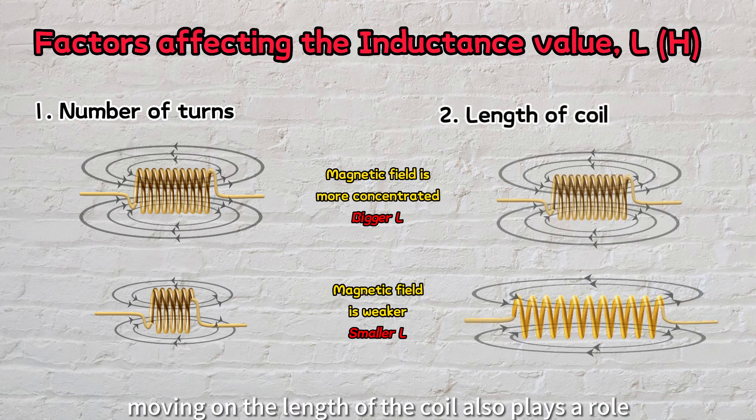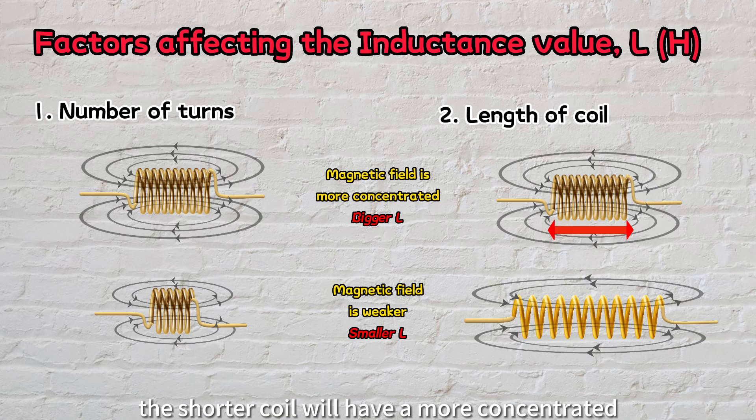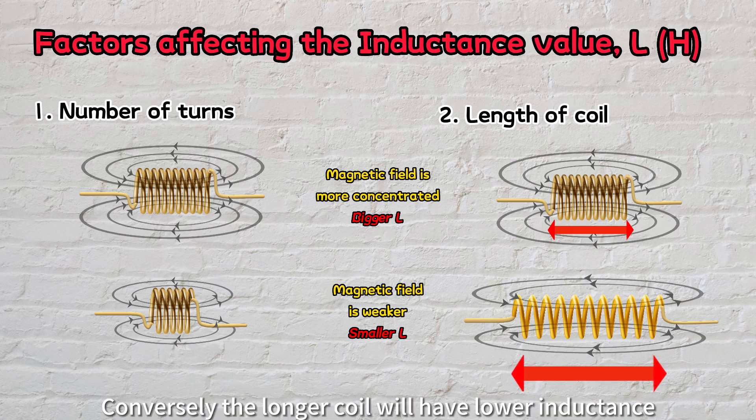Moving on, the length of the coil also plays a role. Imagine two coils with the same number of turns but different lengths. The shorter coil will have a more concentrated magnetic field and higher inductance. Conversely, the longer coil will have lower inductance.